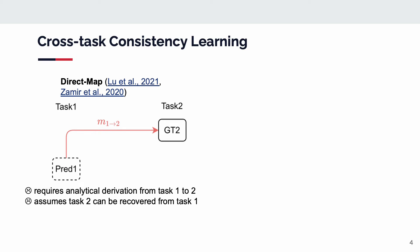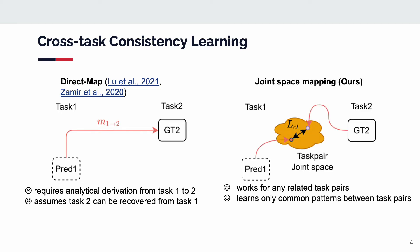Instead of direct mapping, we propose to map both the unlabeled task's prediction and the labeled task's ground truth to a task-agnostic joint space, and regulate the cross-task consistency in the joint space. This works for any related task pairs, and learns only common patterns between task pairs.